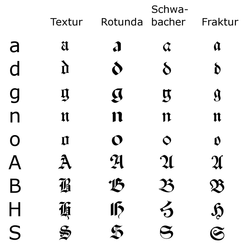Individual Fraktur letters are sometimes used in mathematics, which often denotes associated or parallel concepts by the same letter in different fonts. For example, a Lie group is often denoted by G, while its associated Lie algebra is 𝔤. A ring ideal might be denoted by 𝔞 or 𝔭 if a prime ideal, while an element is a ∈ 𝔞. The Fraktur letter 𝔠 is also sometimes used to denote the cardinality of the continuum, that is, the cardinality of the real line. In model theory, 𝔄 is used to denote an arbitrary model with A as its universe. Fraktur is also used in other ways at the discretion of the author.